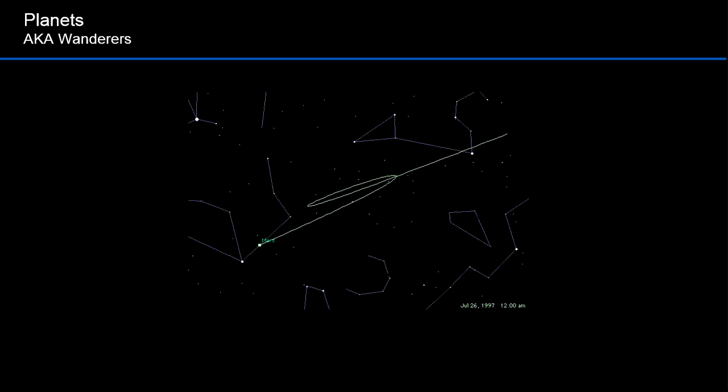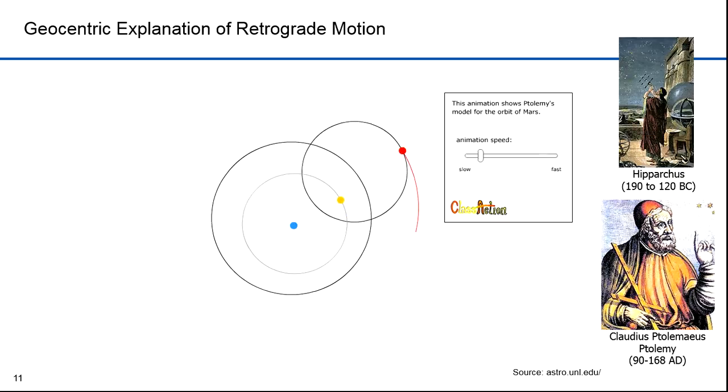Ancient astronomers tried to account for this retrograde motion. Two of the most influential ancient astronomers were Ptolemy and Hipparchus. They devised a system where these planets and the sun orbited the Earth. It was a geocentric model of the solar system. They synthesized a system of circles called deferents and epicycles to explain a geocentric theory of the solar system. The deferent here is the large circle. The epicycle is the smaller one. The Earth is the blue dot in the middle. The sun is the yellow dot and Mars is the red dot. This accounts for the apparent retrograde motion of Mars as seen from Earth.